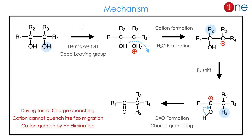What is the mechanism? You are using acid with an alcohol, so acid makes the alcohol a good leaving group. Water leaves, and cation formation occurs. The cation has to be quenched — it cannot quench itself. What really happens is the cation forms near the alcohol by shifting R2 to the second carbon. So the cation is formed near the alcohol, the alcohol loses the hydrogen, and the ketone is formed. The driving force for the rearrangement is charge quenching. The cation is quenched by H+ elimination.